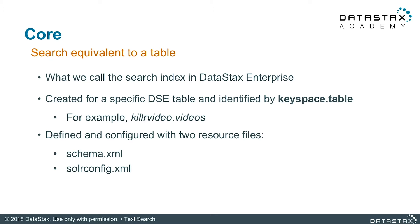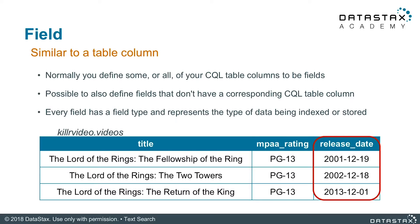Indexes are defined and configured with two resource files: a schema.xml and a solrconfig.xml. These are Solr concepts that still apply today in DSE search. A Solr document is synonymous with a CQL row — this is a one-to-one mapping. A field in search will be the same as a CQL column. Normally you're going to define some or all of your CQL table columns to be the search fields.